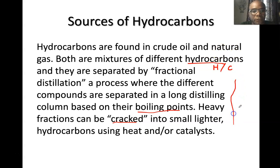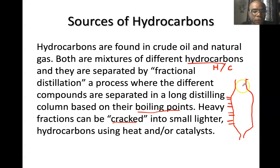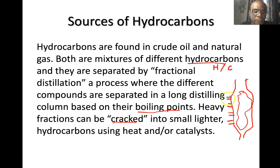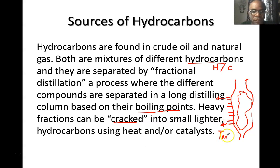Usually you use a distiller that has different outlets. The crude oil is inside a big container and you're heating it up. The fractions that have low molecular weight will boil out first at the lowest temperature. The heavier ones will come out from the bottom — things like tar used to make roads, high molecular weight compounds — while low molecular weight compounds like gasoline come from the top.